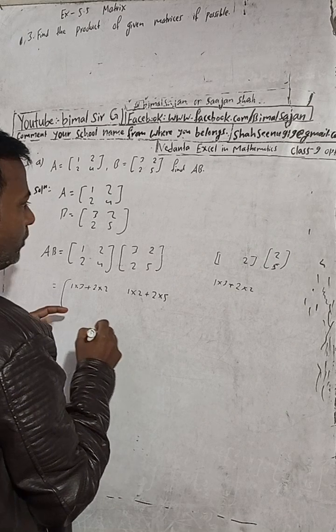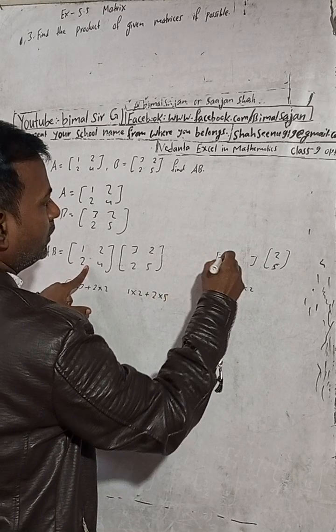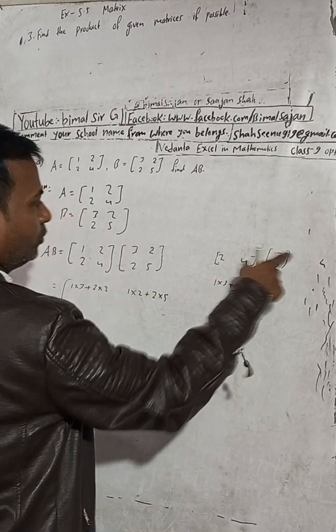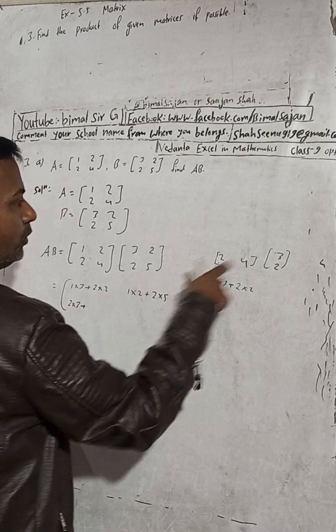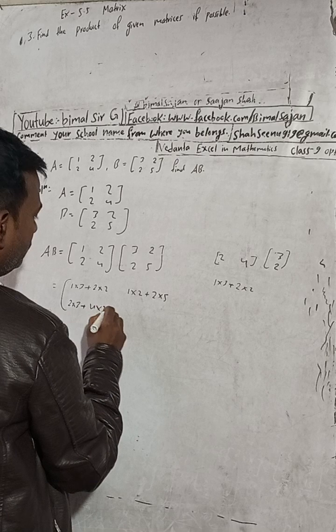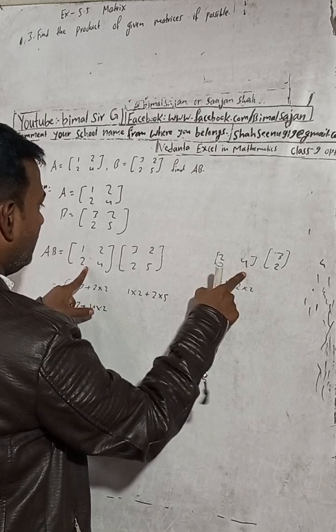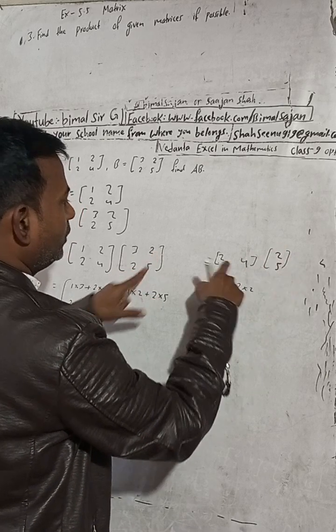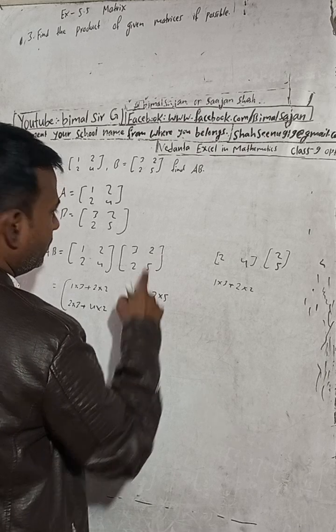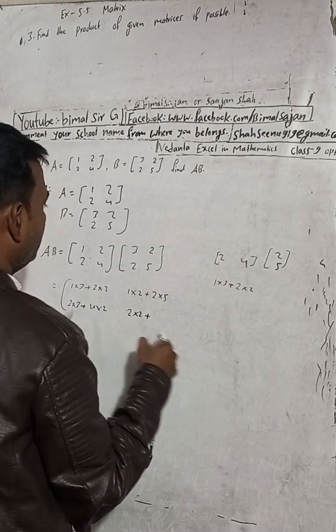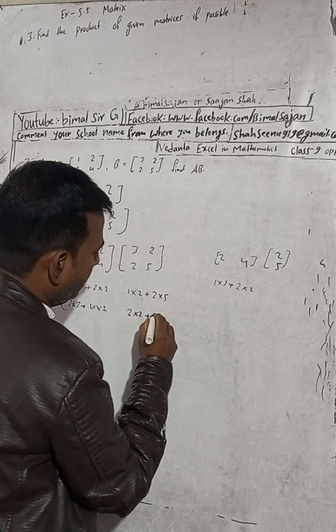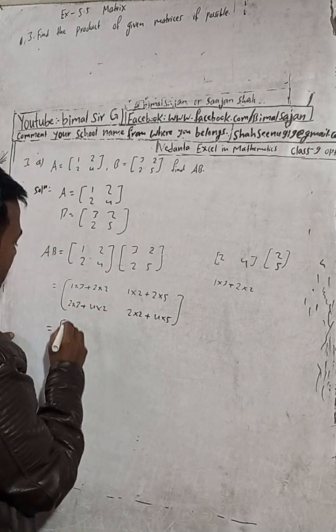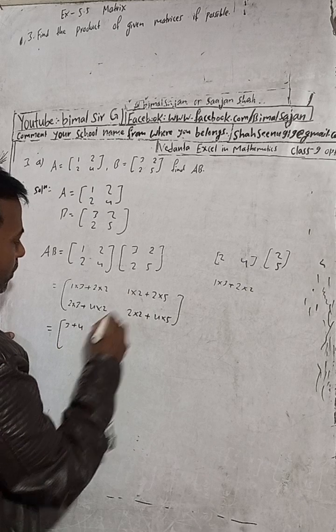Now what we have to do, we take this 2, 4 with this 3, 2. So 2 into 3 plus 4 into 2. And now the same with the second column, 2, 5. So 2 into 2 plus 4 into 5.